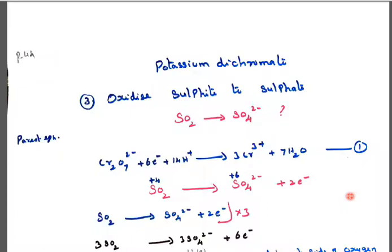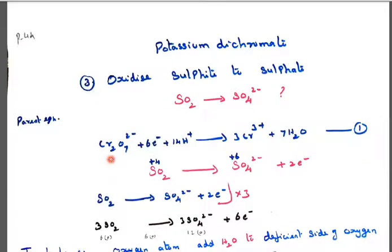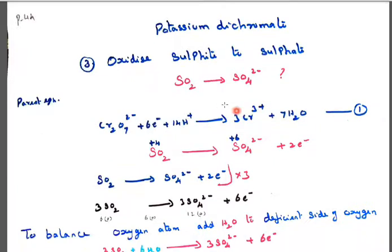Potassium dichromate is the next topic. It oxidizes sulphide to sulphate, SO₂ to SO₄²⁻. Next we should find out the oxidation state of sulphur in sulphide and sulphur in sulphate. So first we will write a skeleton parent equation: Cr₂O₇²⁻ + 6e⁻ + 14H⁺ → 2Cr³⁺ + 7H₂O.